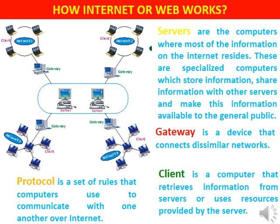Now let's see how the internet works. There are four basic elements: protocol, servers, gateway, and client. Protocol is a set of rules that computers use to communicate with each other over the internet. Servers are specialized computers that store most of the information and provide it to users. A gateway is a device that connects dissimilar networks. A client is a computer that retrieves information from servers — for example, when you search something, your computer acts as a client requesting information from the server.